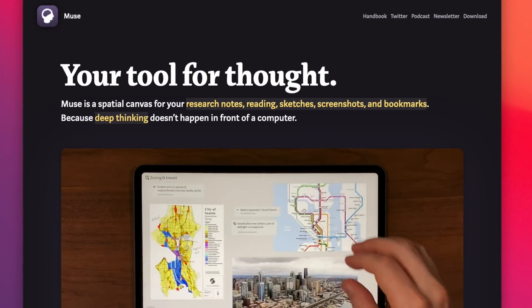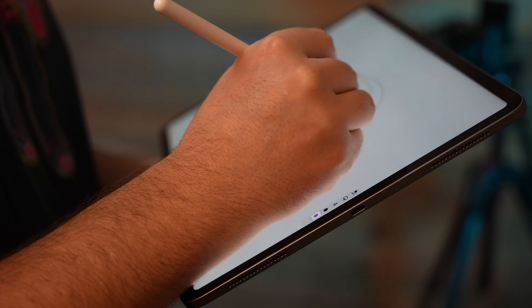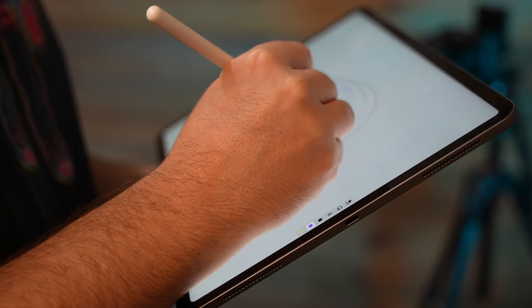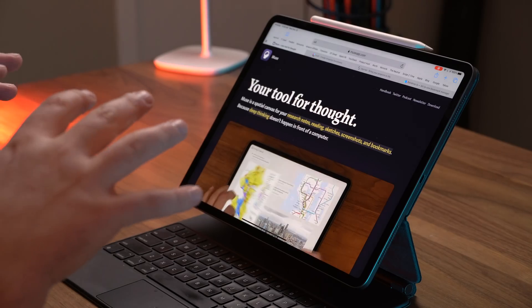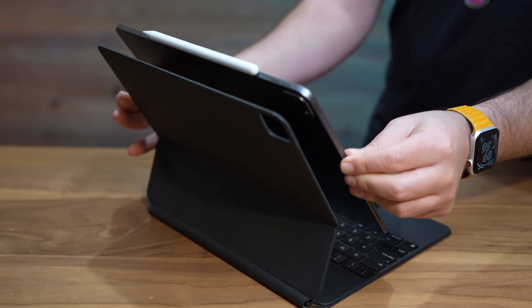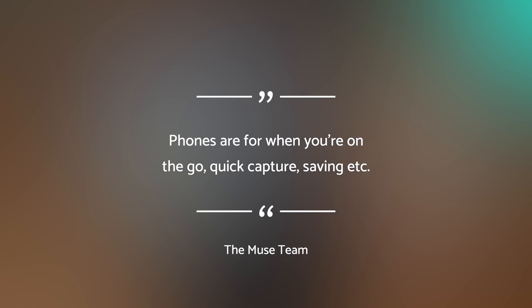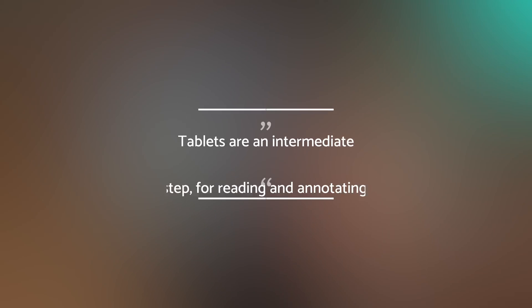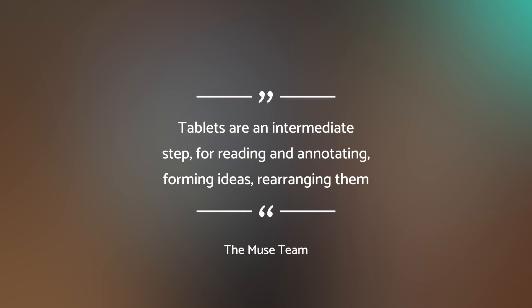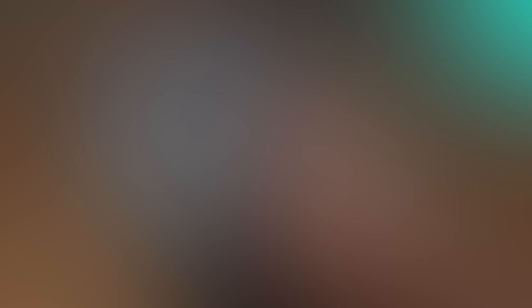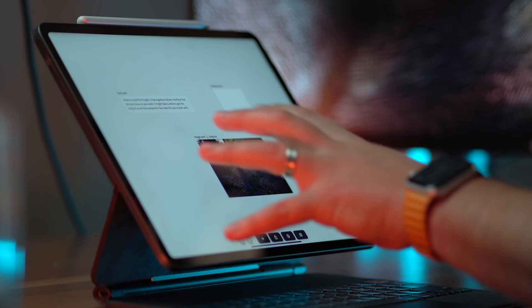The first app we're checking out today is called Muse. It markets itself as a spatial canvas for your research, notes, reading, sketching, screenshots, and bookmarks. To the Muse team, deep thinking doesn't happen in front of a computer — it happens on your iPad. Desktops are for the most complex sophisticated tasks, phones are for when you're on the go for quick capture, and tablets are an intermediate step for reading, annotating, and forming and rearranging ideas.